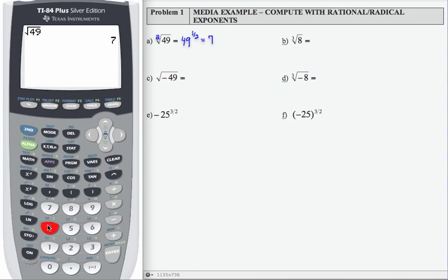Notice we can also raise 49 to the 1 half power, and I'm going to go ahead and put parentheses around the exponent, even though on this calculator I don't really need to, but on some calculators you do. So I'm going to show you that that also equals 7.